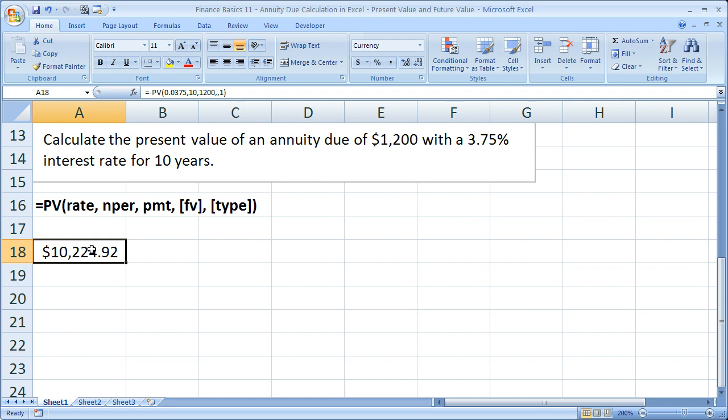And so that's really all there is to calculating annuity dues with present values and future values. Problems could be more or less complicated than this, but really the only important part when in Excel is to make sure that you have the one right here for the type argument.